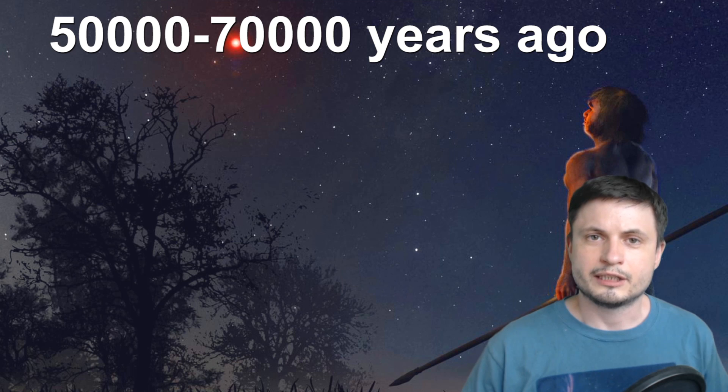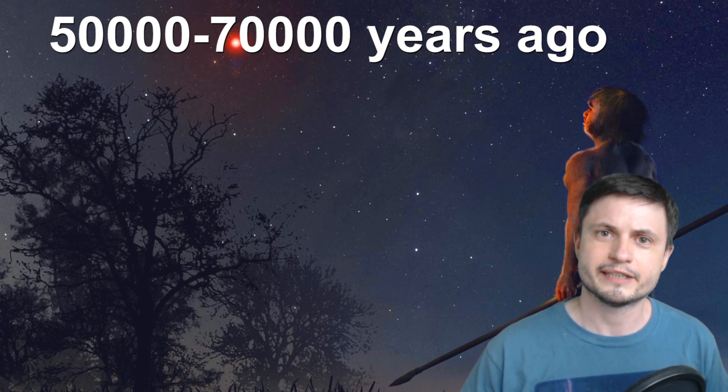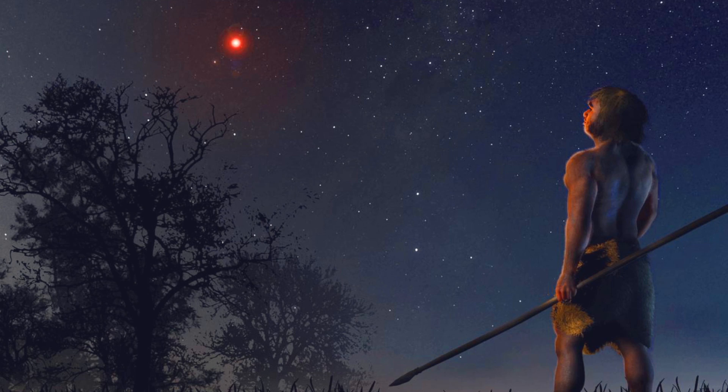And it turns out that the so-called Scholz star was actually a visitor in the solar system roughly around 50,000 years ago. And a wonderful person by the name of Jose Penas then created this beautiful illustration sort of showing us what the early humans may have seen 50 to possibly 70,000 years ago when the star was in the vicinity of our own sun.